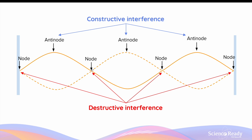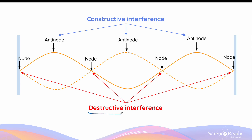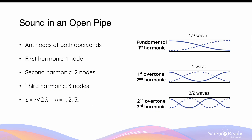Antinodes and nodes are two important features of standing waves. The antinode is the point at which the standing wave experiences the greatest displacement of oscillation — that is, its maximum amplitude. The node is the point at which the standing wave does not experience any oscillation — where the amplitude is zero. Antinodes are the result of constructive interference between the progressive waves, and nodes are the result of destructive interference.